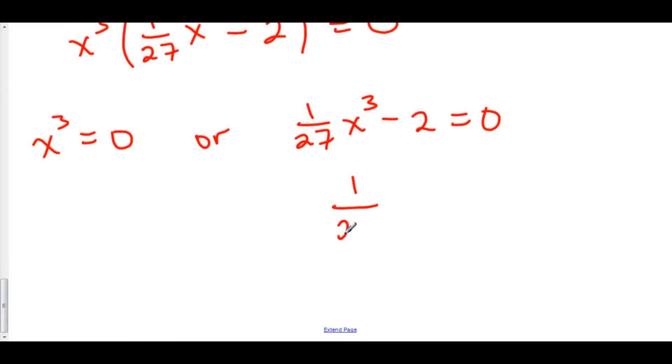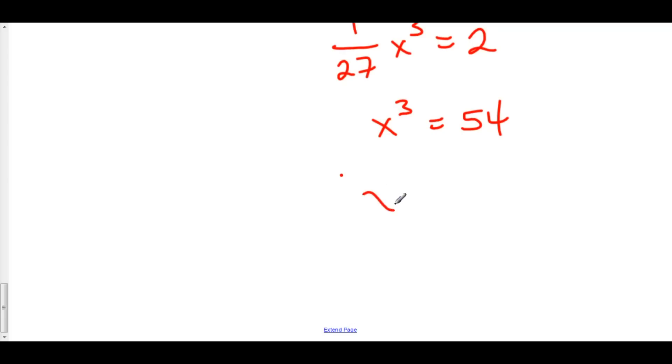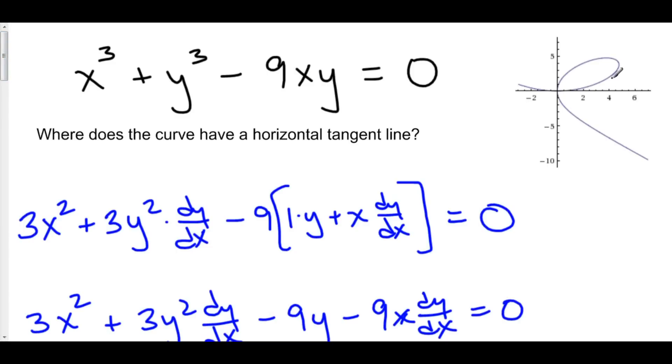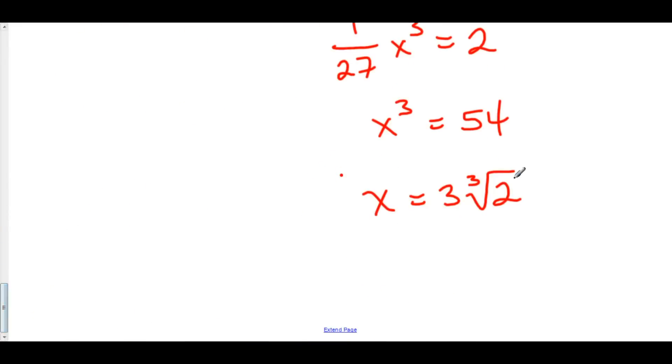We'll add 2. So we have 1 over 27x cubed is equal to 2. We can multiply both sides by 27. So x cubed is equal to 54. And that means that x is equal to the cubed root of 54, which is 3 cubed root of 2. And so that is our last point where we have a horizontal tangent line. And I guess right here is x equals 3 times the cubed root of 2.